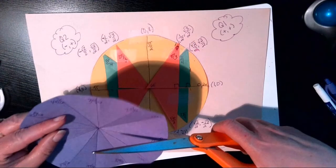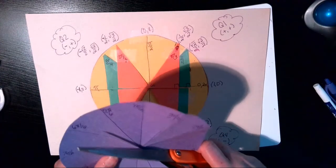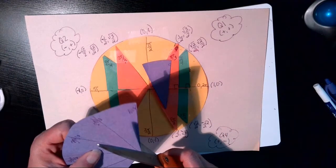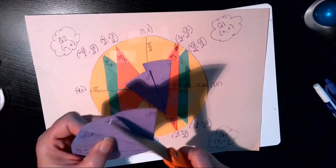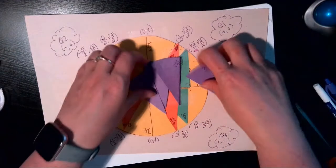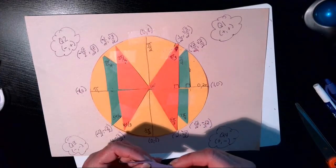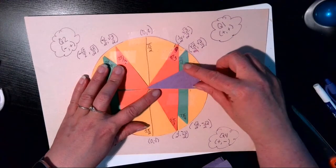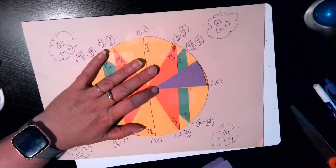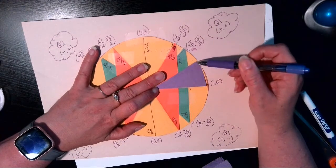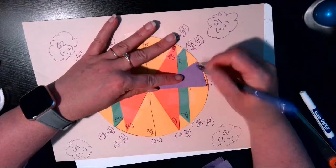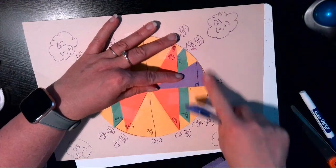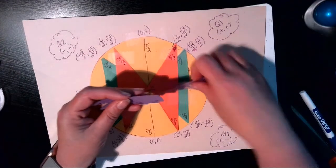So let's go ahead and cut out the pi over 6 angle so we can get a reference triangle here. I'm just going to go ahead and cut four of them while I'm at it, because we're going to need them anyway.